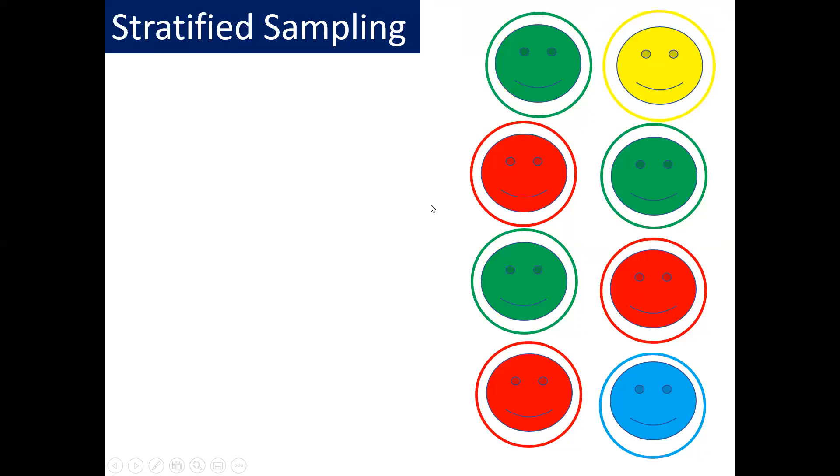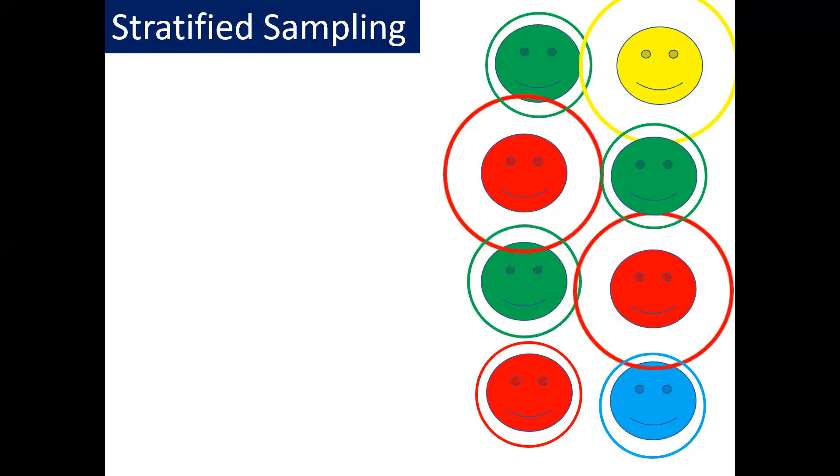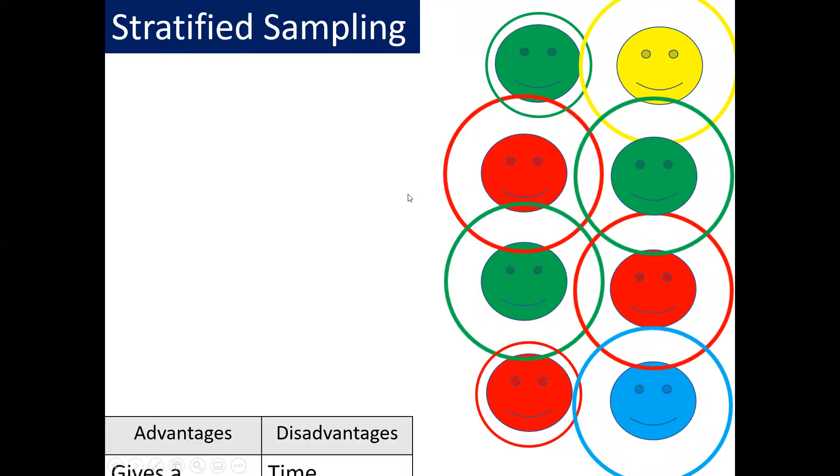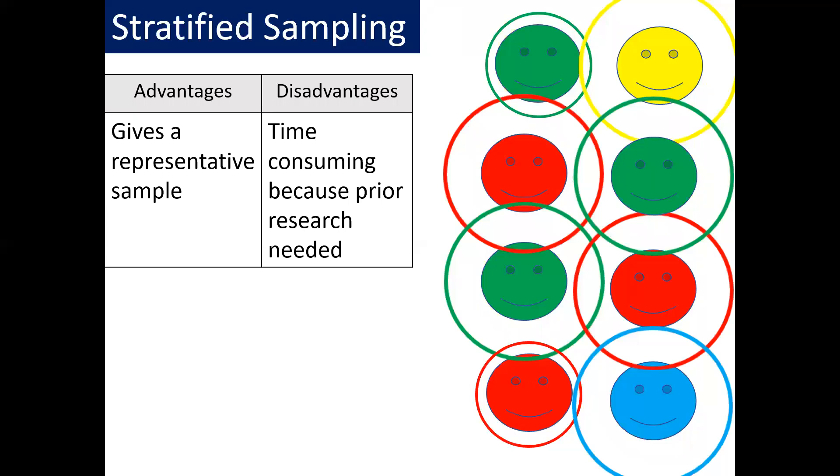Therefore, to make this sample stratified we need to speak to more green people and more red people. So what we could do is we could speak to the yellow person, we could speak to two of the red people, two of the green people and the blue person. Therefore, our data is going to include more information from the red and green people and that's because there are more of them in the population. So the advantage of this is that it gives us a very representative sample. It tells you about the realistic population that you're looking at. But the disadvantage of this is it's very time consuming and that's because you have to do some research before you begin your investigation.